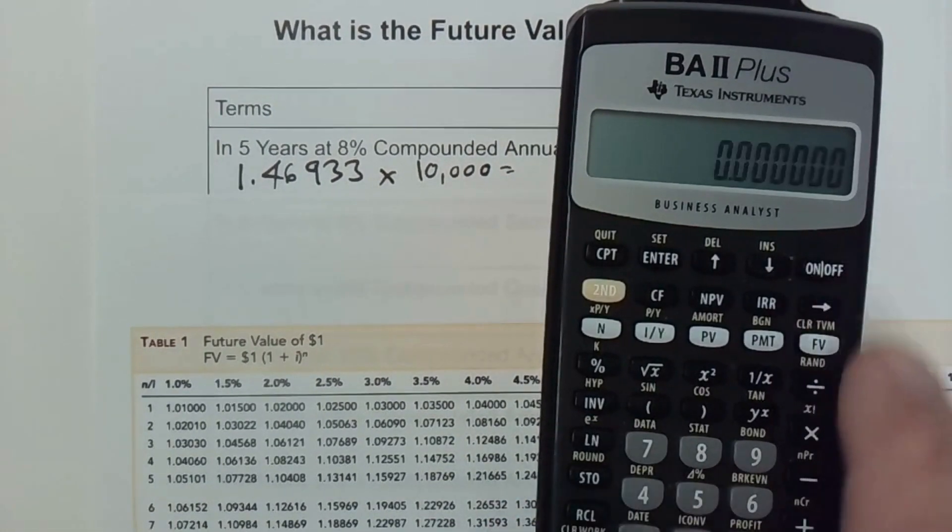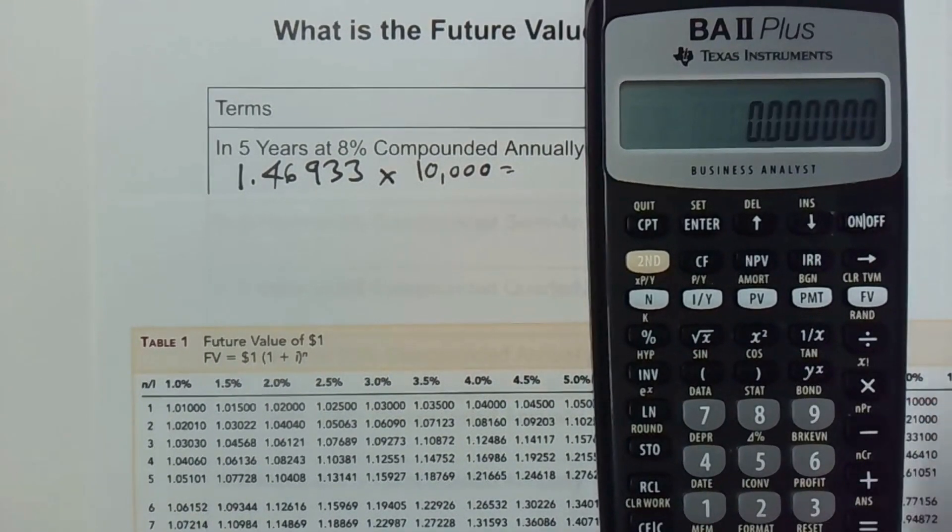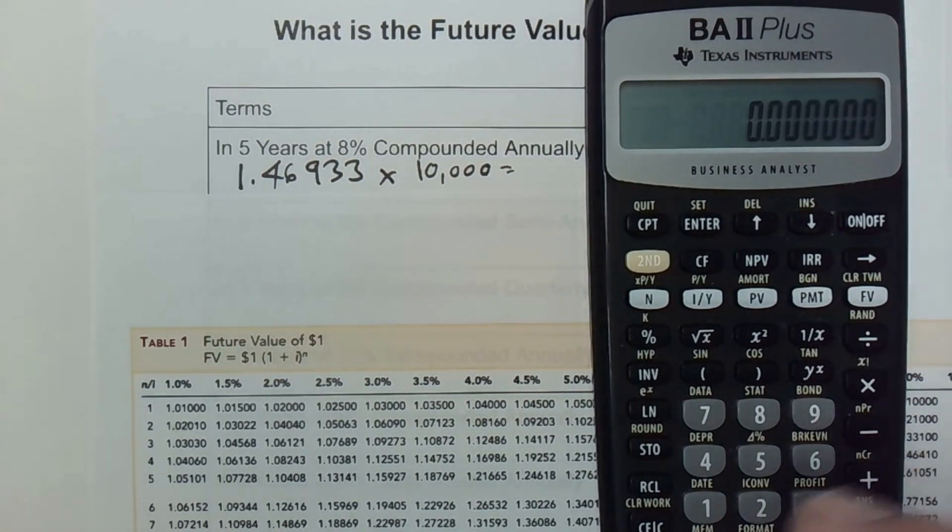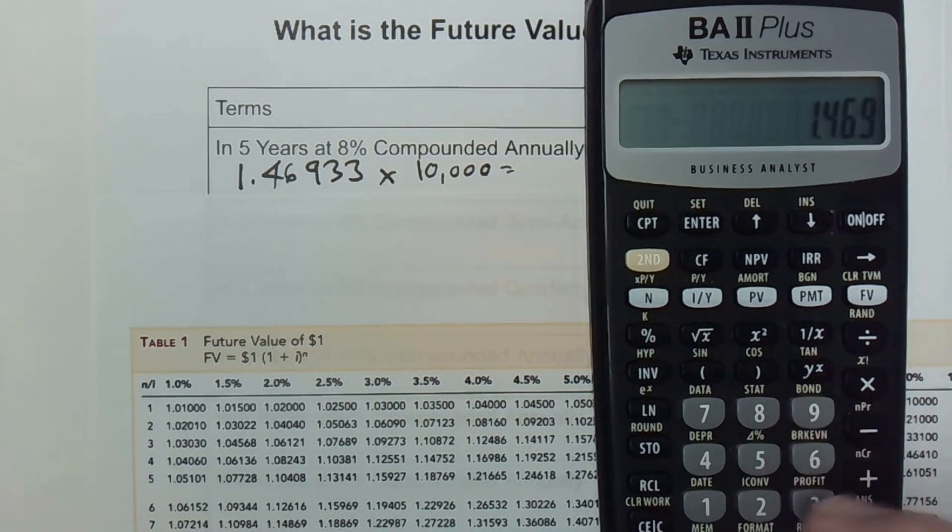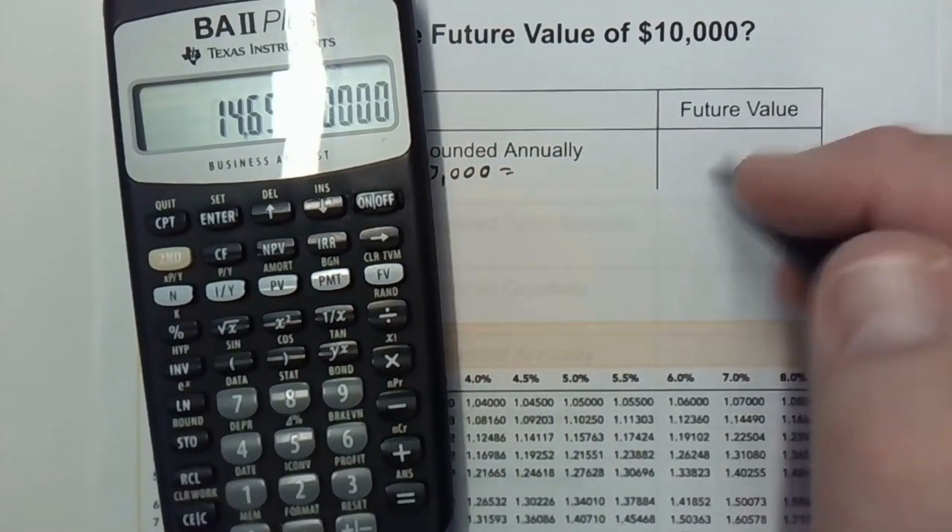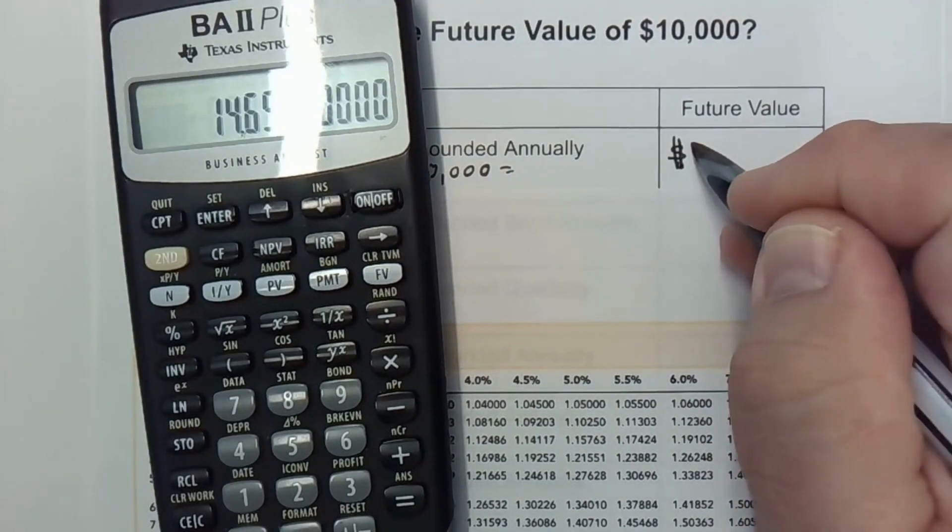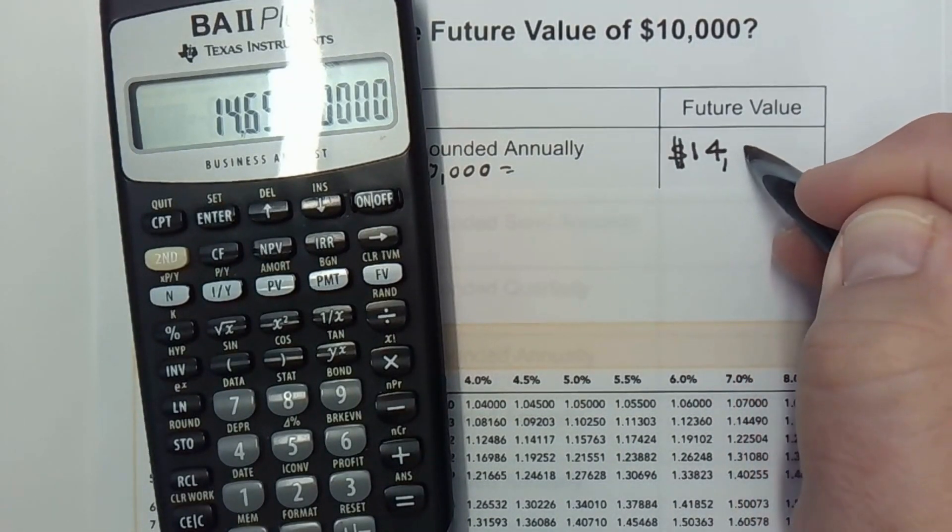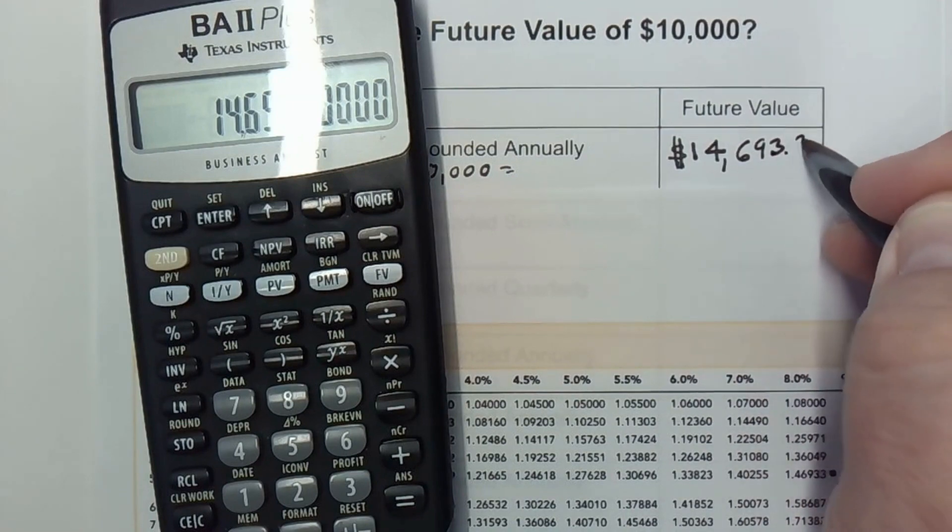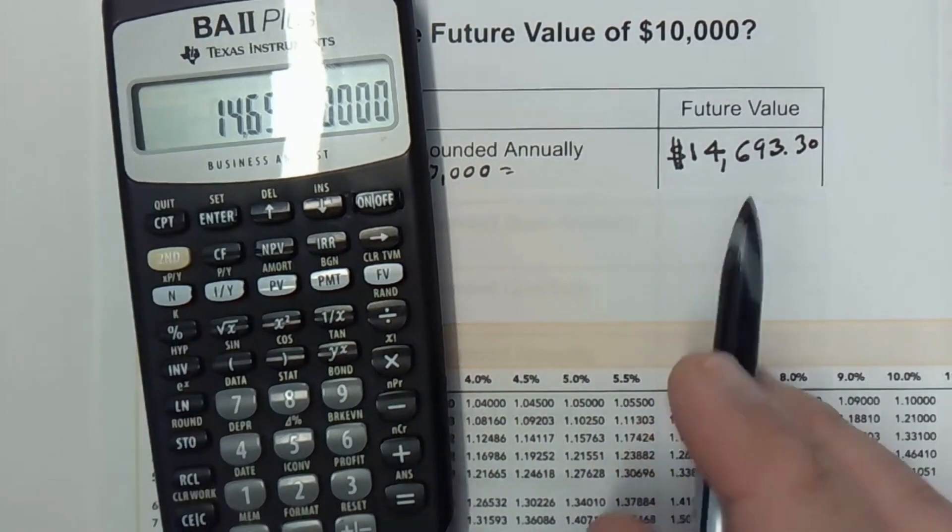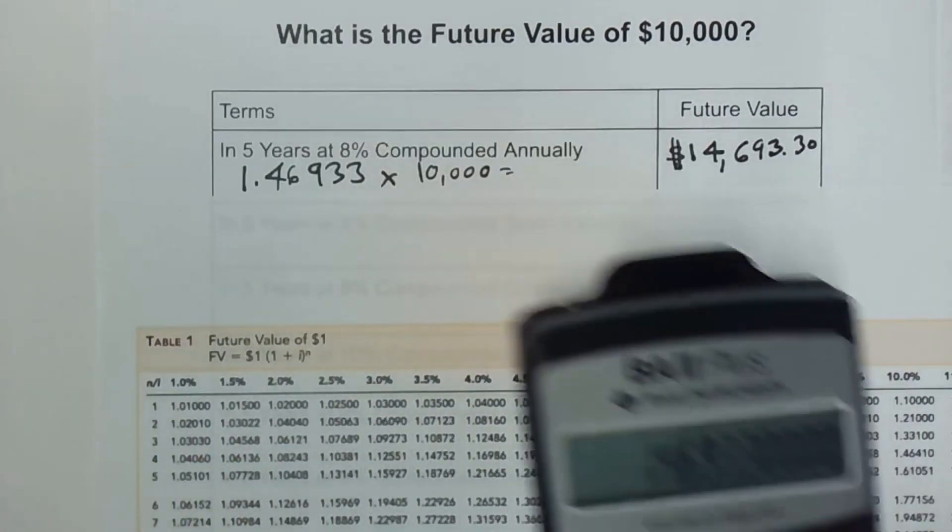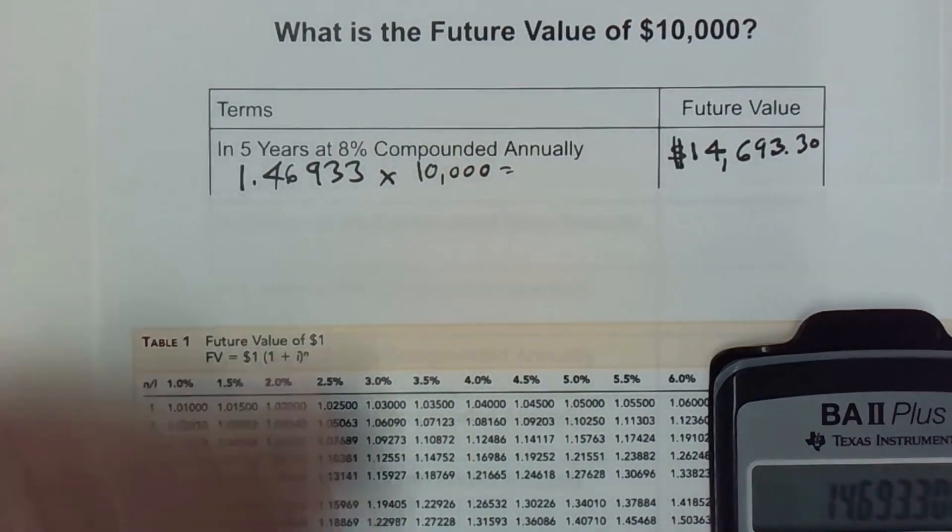That's going to give us our future value. I'll use the BA2 plus calculator, which yes, admittedly, I could just put those figures in here and get the future value. But today's video is finding the future value using the tables. So I take that factor, 1.46933, and I multiply it by the 10,000. We could just move the decimal place over, but I'm going to use the calculator just to make sure we don't miss anything. $14,693.30. So that's our future value of the $10,000 if we invested it for five years at 8% interest compounded annually.